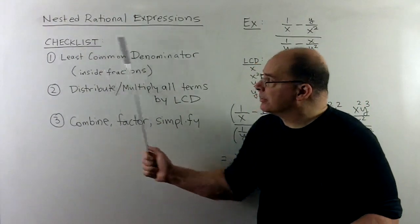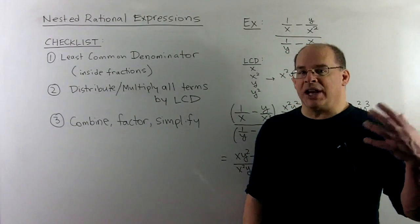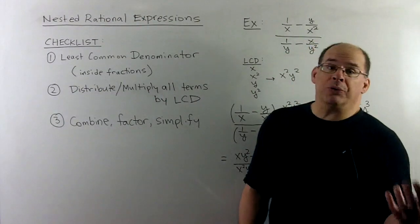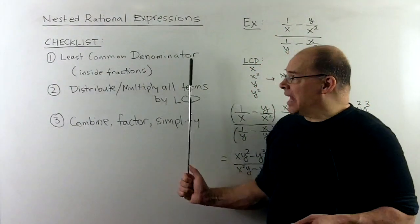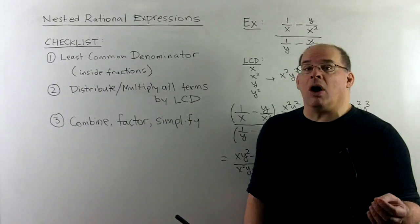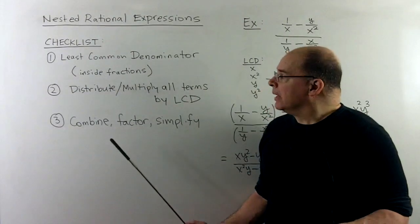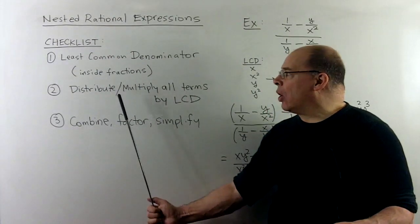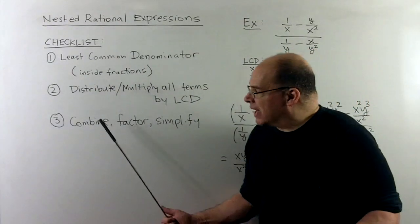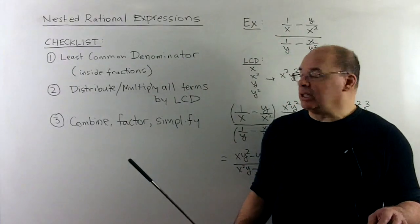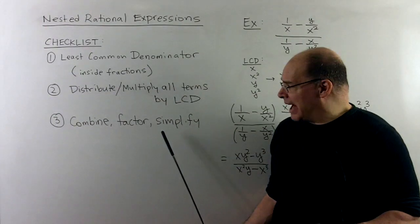Now, for a checklist, we'll have inside denominators and an outside denominator. We want to focus on the inside denominators. For those, we want to find the least common denominator. The goal is to clear all the inside denominators. So once we have that, we can think of it as distributing or just multiplying all terms by the LCD over 1. Once we've done that, all the denominators should clear. Then it's our usual combine, factor, simplify if possible.